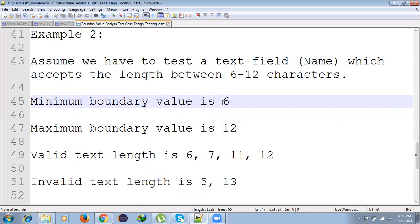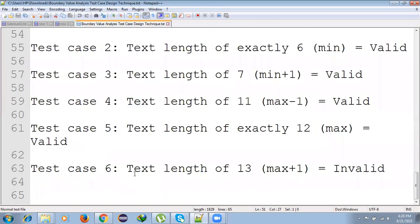Minimum minus one means five. If you give five, then it should be an invalid value. And 12 plus one is also an invalid scenario because it can accept only 6 to 12 characters. 6 plus 1 equals 7, which is valid. 12 minus 1 is 11, which is valid. Valid text length is 6, 7, 11, 12. Invalid text length is 5, 13. Test case 1: Text length of 5 (min-1) equals invalid. Test case 2: Text length of exactly 6 (min) equals valid. Test case 3: Text length of 7 (min+1) equals valid. Test case 4: Text length of 11 (max-1) equals valid. Like this we are going to divide our test cases.